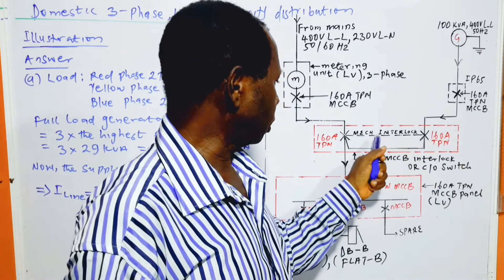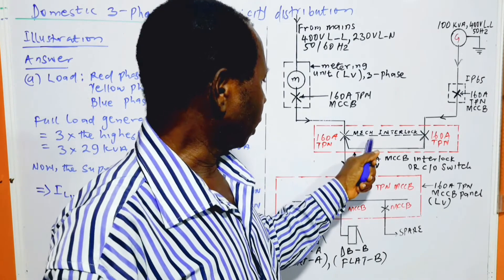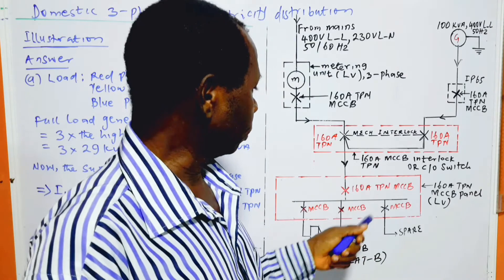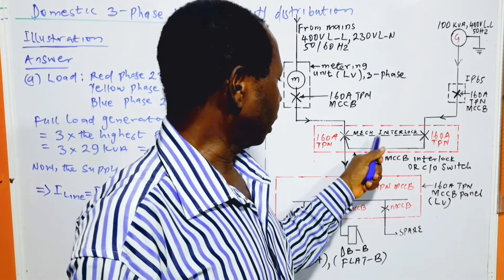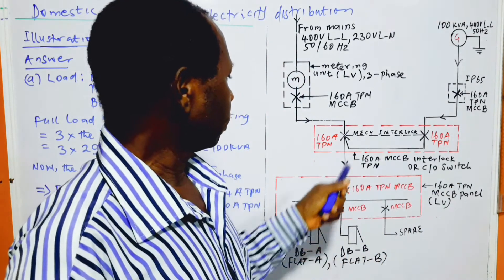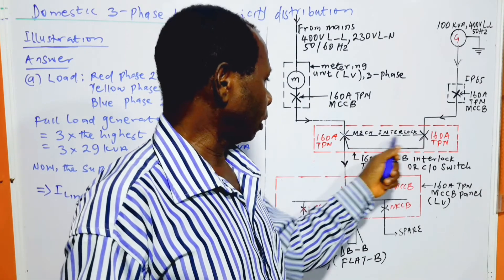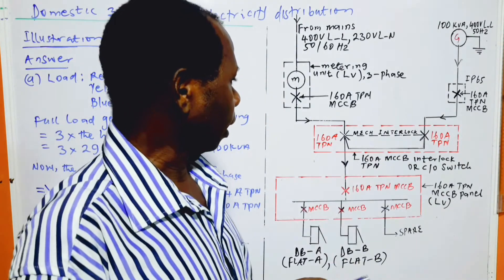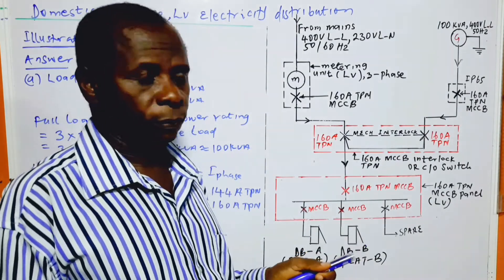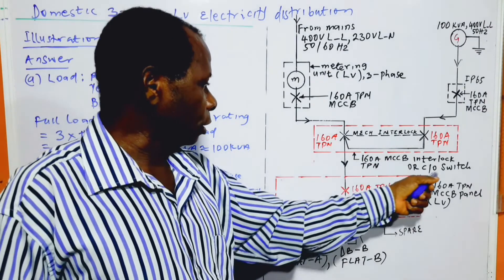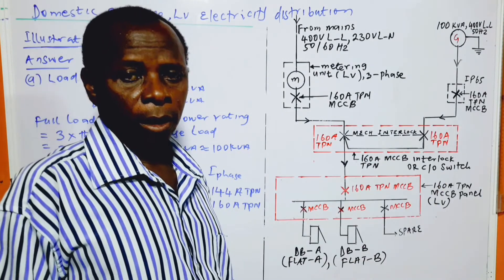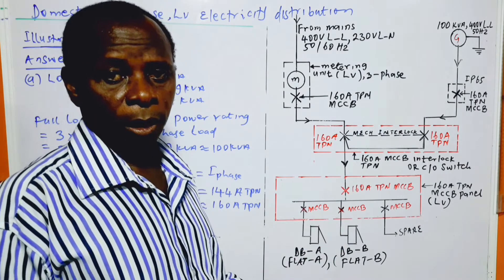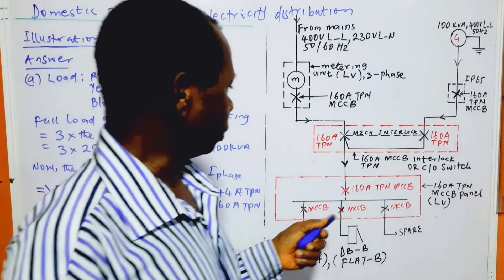I am using interlock here, mechanical interlock, but there is also an option of making use of changeover switch. But the advantage of using mechanical interlock like this is that these are circuit breakers and they can offer protective functions, unlike ordinary changeover switch which will not offer any protective function as it doesn't have any circuit breaker or any fuse inside it.